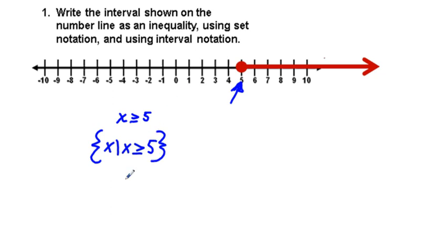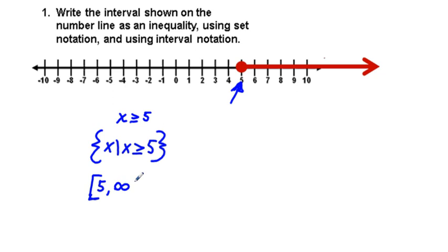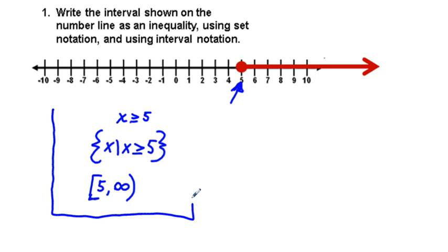Lastly, interval notation. We're going to use brackets and parentheses. In this case, we are starting out with x equals five, so we put a square bracket here and we put five. This represents that we are starting at five. Then we put a comma and go up toward infinity. But we do not include infinity, so we close off with parentheses. So our interval notation is [5, ∞). These are our answers representing our notations as asked for.